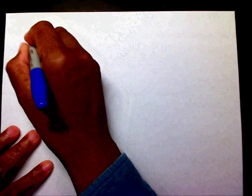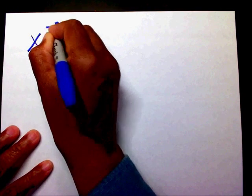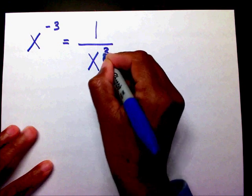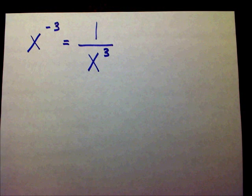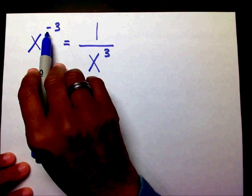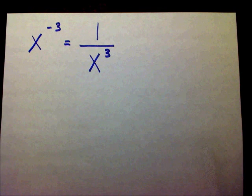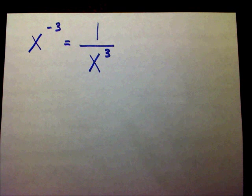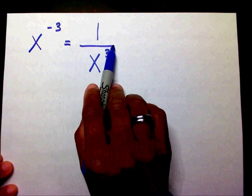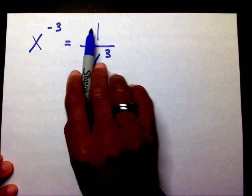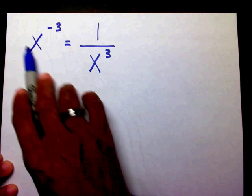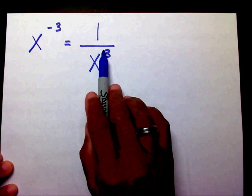The rule is: x to the negative 3 equals 1 over x to the 3rd power. Whenever you have a negative exponent, the first thing that needs to come to mind is a fraction. I need to create a fraction. When you create this fraction, in your numerator you're going to place a 1, and in your denominator you're going to place this entire power without the negative sign.